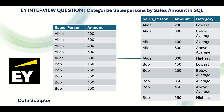Greetings everyone, welcome back to my channel Data Sculptor. Today we are going to see another interesting question. We have two columns called salesperson and amount, with two salespeople — Alice and Bob — and their amounts. The output requires adding another column called category, where the amount values should be categorized as lowest, highest, below average, average, and above average, for each salesperson separately.